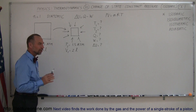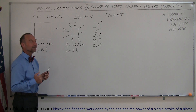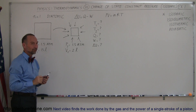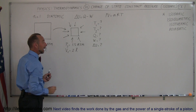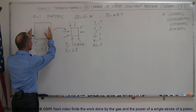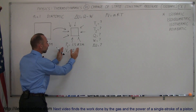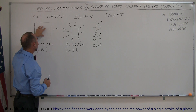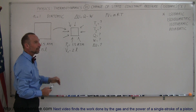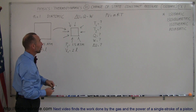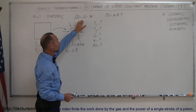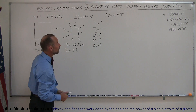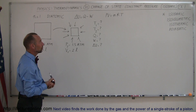This problem looks a lot like the one from the previous video, but we have some added information. We have a gas that starts at a pressure of 1.5 atm. Since the pressure doesn't change, it ends at 1.5 atm. It gets compressed from an initial volume of 15 liters to a final volume of 2 liters. We have one mole of diatomic gas. We write down two key equations: the first law of thermodynamics, and PV = nRT for ideal gases.